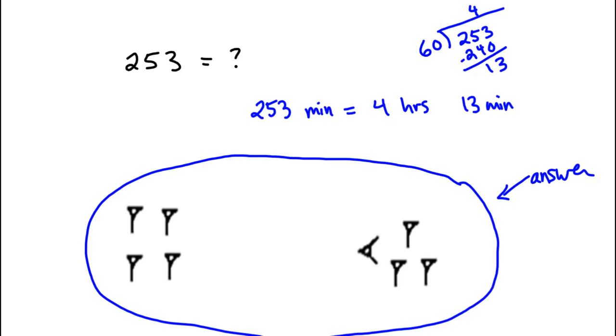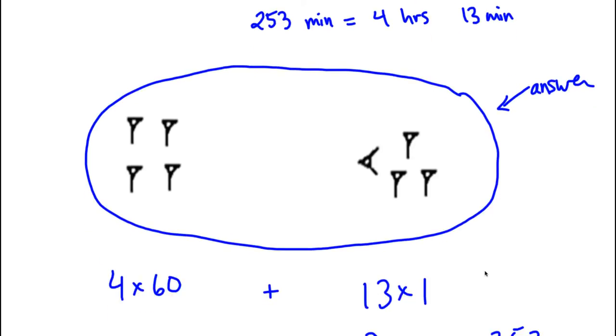Here's another example. How about 253? You could think, 253, now how many 60s do I have here? And the answer is there are four 60s. It'd be like thinking, how many hours do you have and how many minutes left over? If you take 253, divide it by 60, it goes four times with 13 left over. So I need four in the 60s place and 13 in the ones place. And that makes this 253. Four times 60 is 240 plus 13, it's 253.